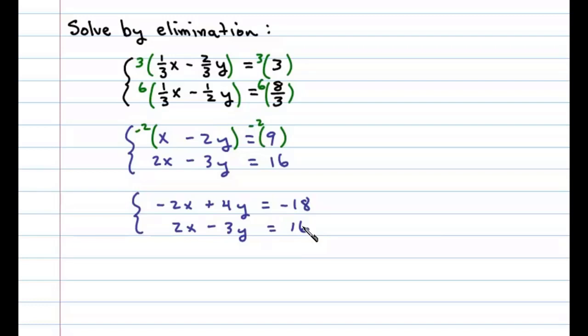Now adding these two equations together, we can see the variable X eliminates, and that leaves us with 4Y minus 3Y, or Y equals negative 2. So at this point we'll back substitute to find the corresponding X value.